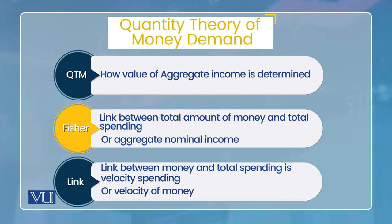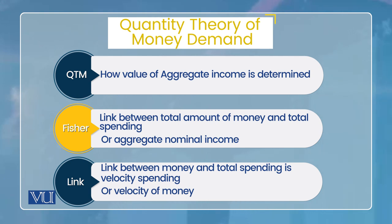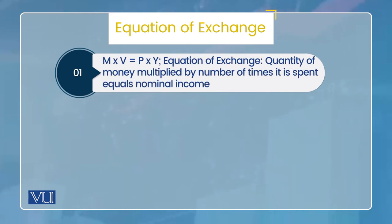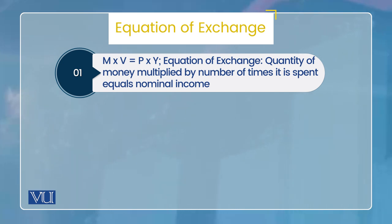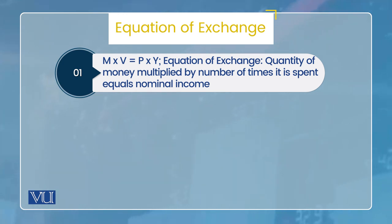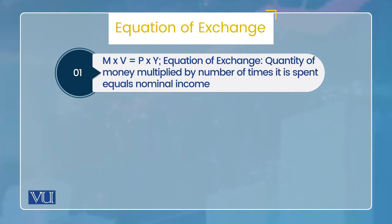Fisher کے analysis کا result یہ نکلا کہ money اور total spending یا total income کے درمیان link velocity کے ذریعے establish ہوتا ہے۔ تو جو basic equation quantity theory of money کی بنی وہ ہے: M × V = P × Y۔ یہاں P price ہے، Y total economic activity ہے، تو P × Y total spending یا total nominal income ہو گئی۔ Velocity کی basic definition یہ ہے کہ ایک روپیہ یا ایک unit of money کتنی دفعہ transaction میں ایک سال کے دوران use ہوتا ہے۔ تو: money multiplied by its velocity is equal to total spending or total income۔